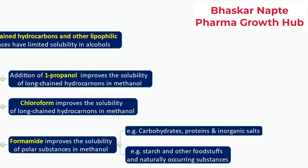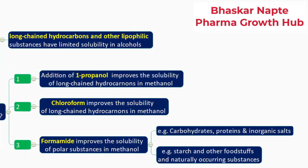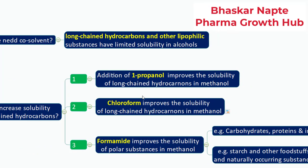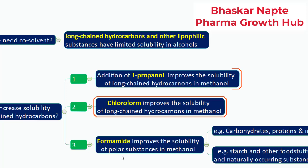So to summarize the co-solvents discussed in this video, there are three important ones: the first is 1-propanol, the second is chloroform, and the third is formamide. What other co-solvents do you know that can also be used during KF titration? Please type in the chat box. Thank you so much.